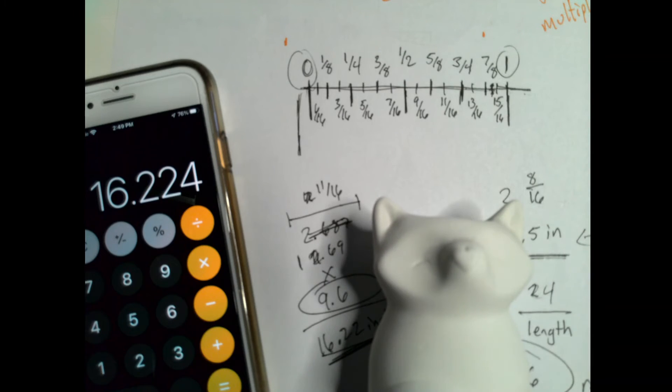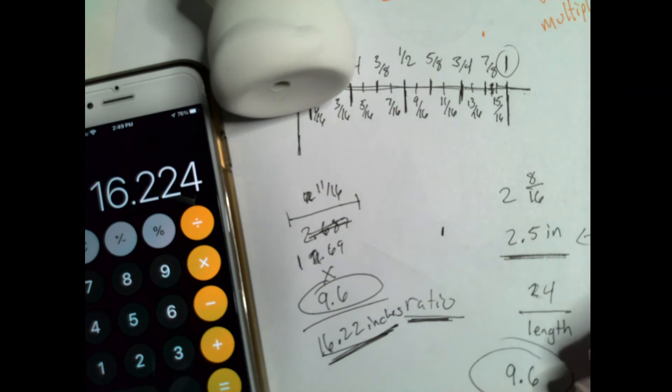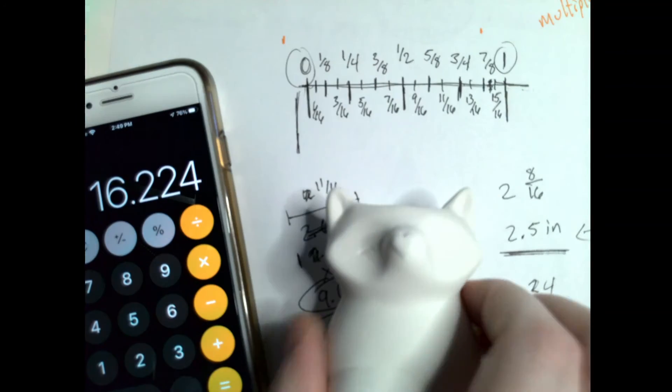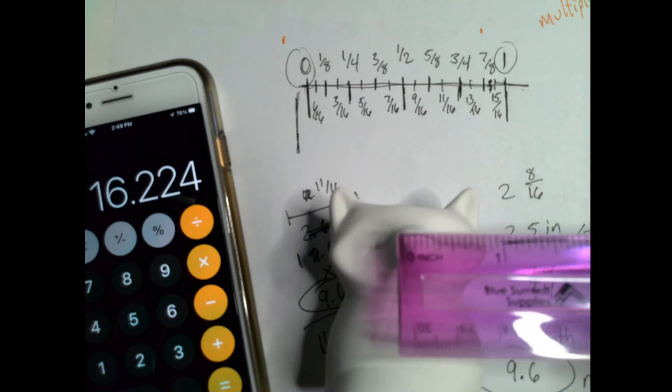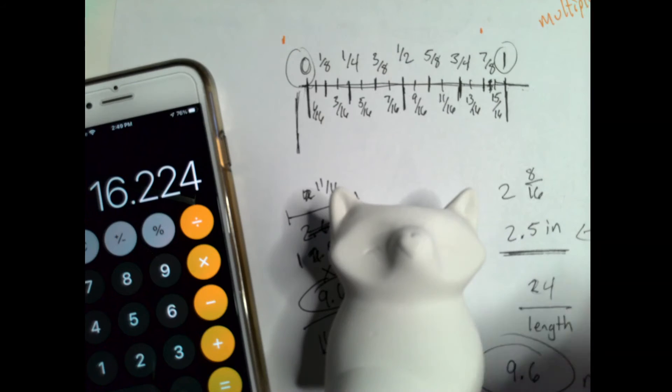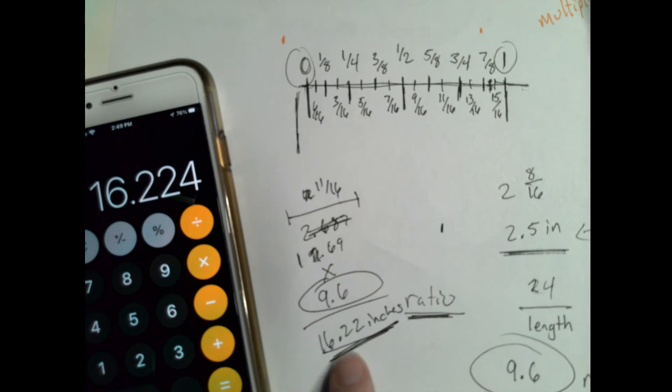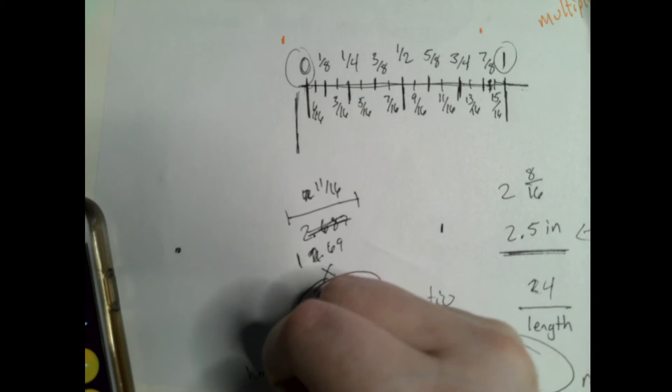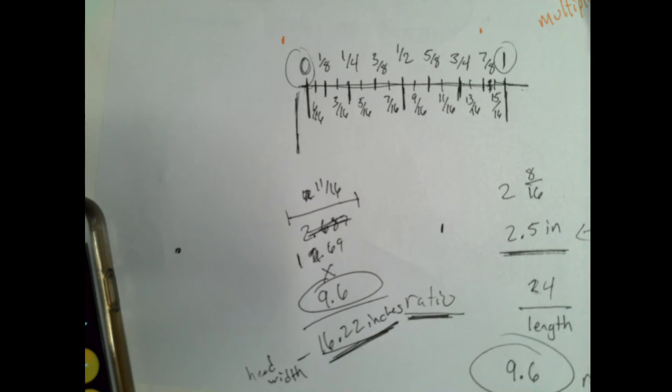So for every measurement, once you have your ratio, which again is 24 divided by our length that we found, I have to take that measurement, nose, head, ear, whatever it is, multiply it by the ratio and write those numbers down. Make sure to label things. So like that's head, width. Otherwise, you can get really lost.